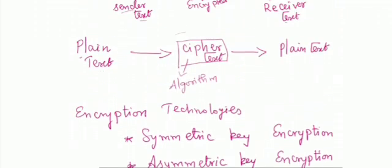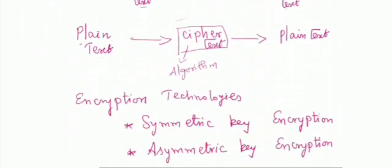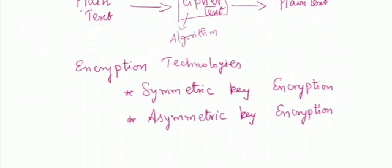In encryption, the sender has plain text. In between it becomes cipher text, and then it is automatically decrypted into plain text at the receiver end. For the encryption purpose we have two technologies: the first one is symmetric key encryption, and the next one is asymmetric key encryption.